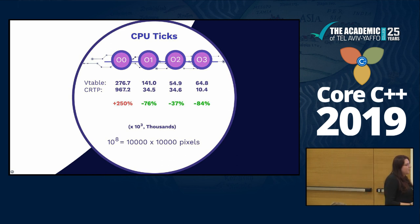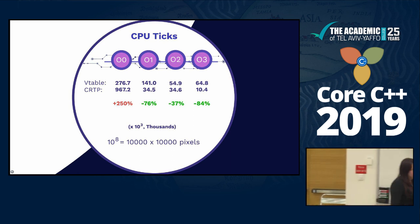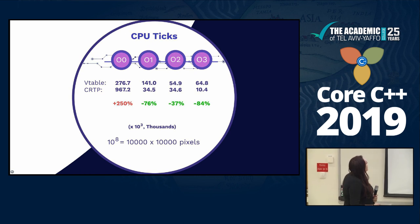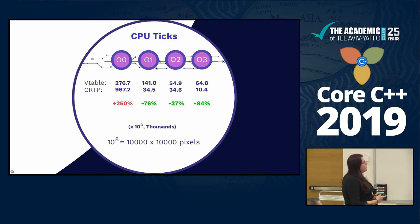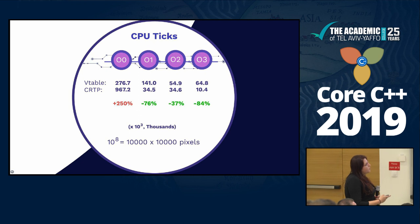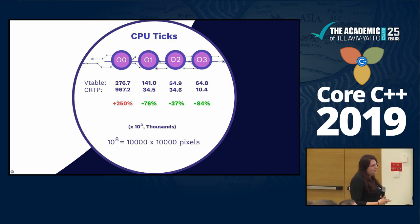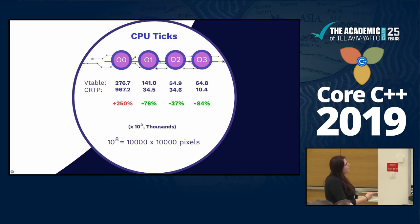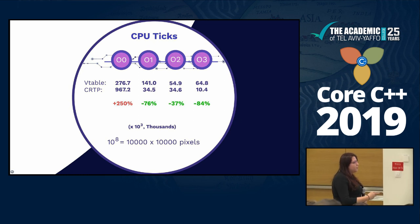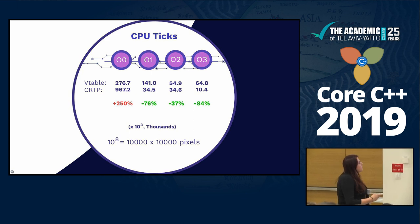At O3, we get the biggest performance optimization with CRTP — up to 84% improvement. When asked about the virtual table getting worse at O3, I wouldn't treat that difference as very meaningful since it's within the range of CPU tick variation across runs — it's the same order of magnitude.